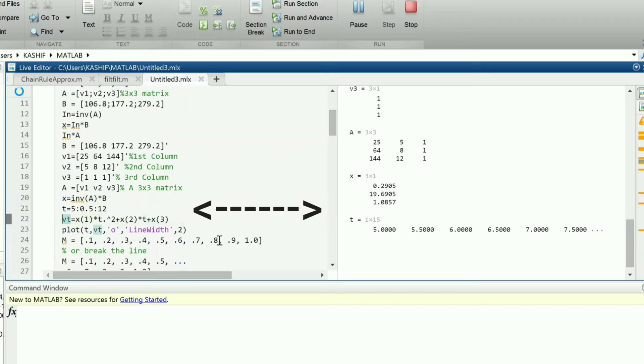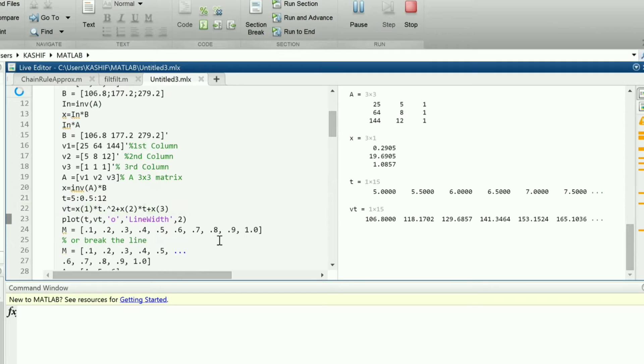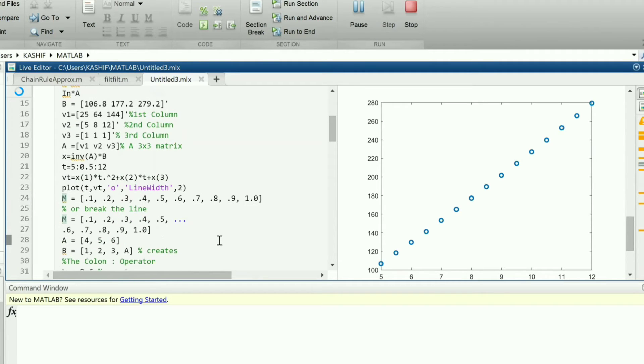We create a time steps array from 5 to 12 seconds in increments of 0.5 seconds. Then we update a vector vt of the same size and is equal to x1 times t dot square plus x2 times t plus x3. We then plot time t versus vt. The dot operator is used for element-wise operations. In this case, square of each time value is obtained.